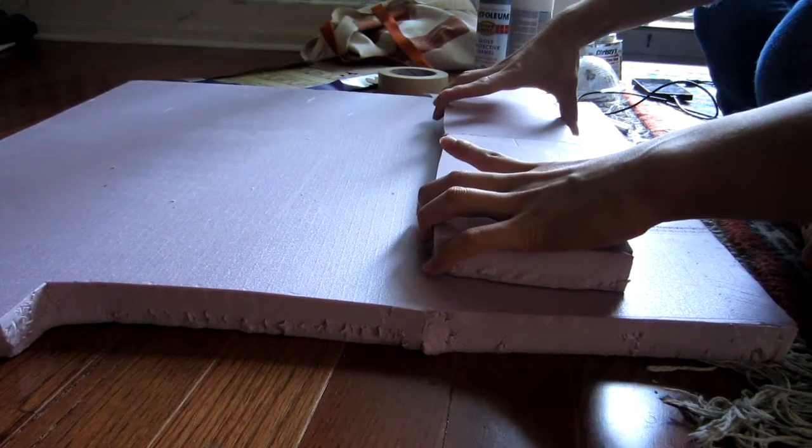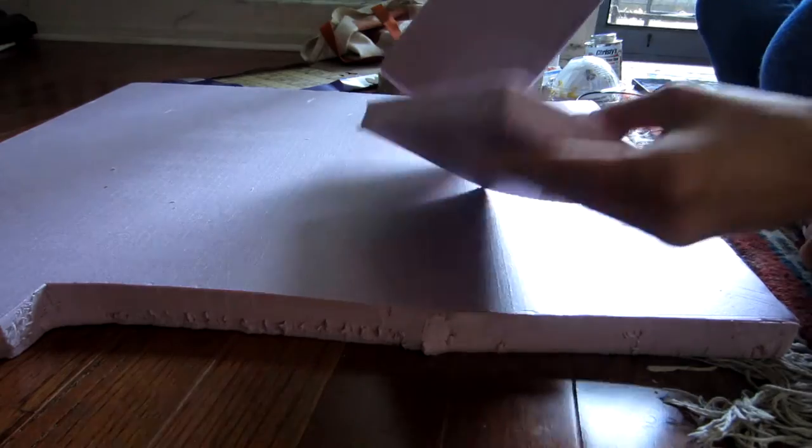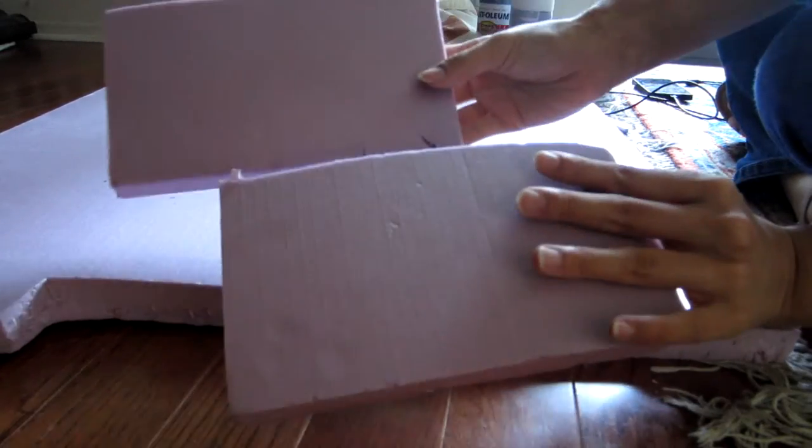These two rectangular pieces actually make up the sides of the mask that will go on either of your cheeks.